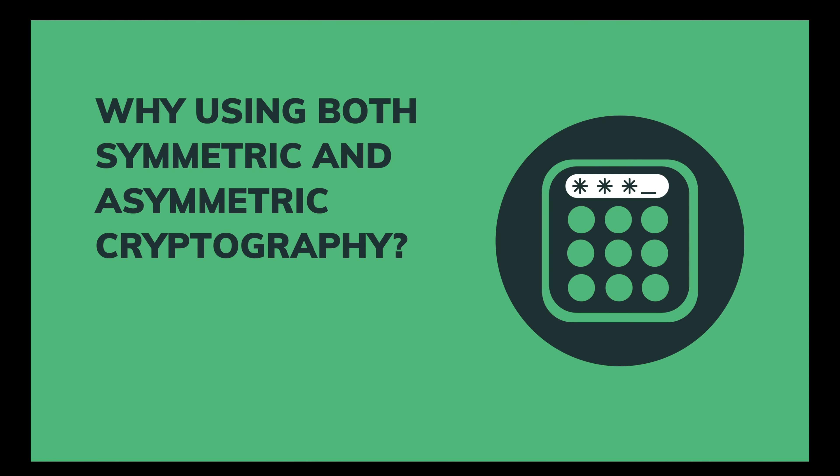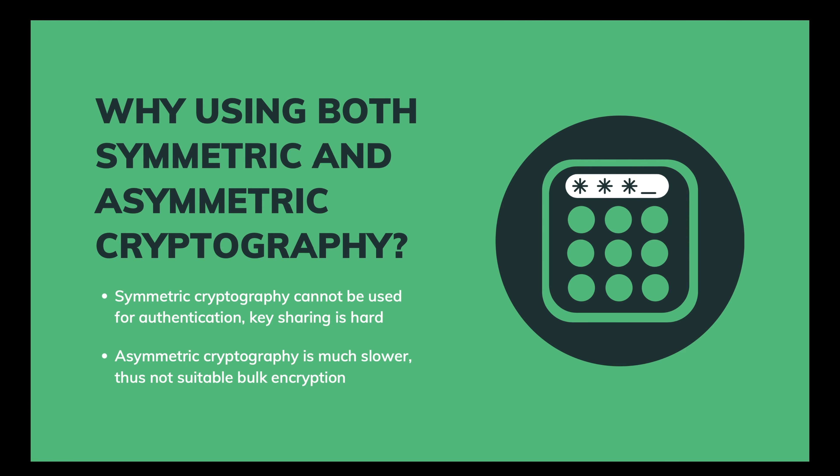You may wonder why TLS uses both symmetric and asymmetric cryptography — why not just use one for all? Symmetric cryptography can't provide authentication, since there's only one secret key shared by both client and server, so they know nothing about each other to verify. Not to mention that agreeing on the same key without leaking it to the public is hard. How about asymmetric cryptography? Unfortunately it's much slower than symmetric cryptography — from 100 times to even 10,000 times slower — so it's clearly not suitable for bulk encryption.